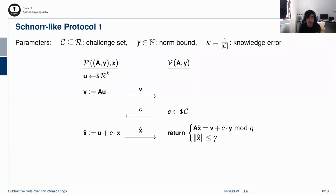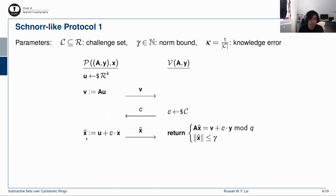Let us look at two examples of Schnorr-like protocols. The first is the lattice analog of the textbook Schnorr-like protocol: the prover samples a short vector U, computes V = A times U and sends it. The verifier chooses a challenge C from challenge set big-C. The prover returns U plus C times X, and the verifier checks the corresponding relation. The knowledge error of this protocol is inversely proportional to the size of challenge set big-C, so a polynomial-size challenge set yields inverse polynomial knowledge error.